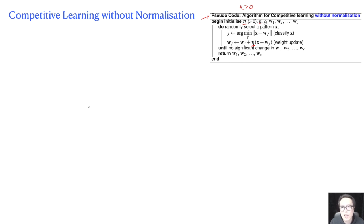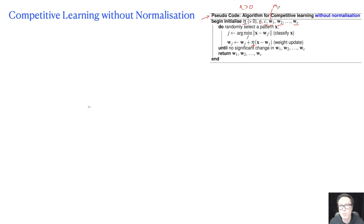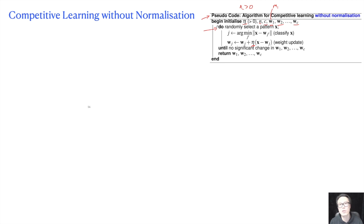c is the number of clusters we want to generate, meaning we divide the dataset into c clusters. w1, w2, up to wc — previously written as m1, m2, mc — are the cluster centers. When we first enter the loop, we randomly pick a sample x.